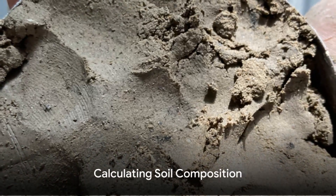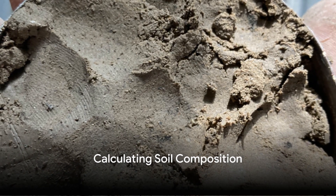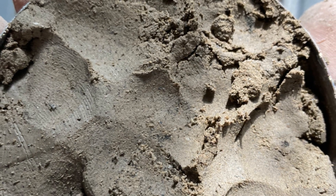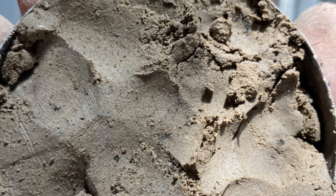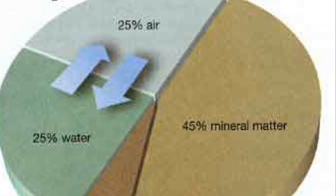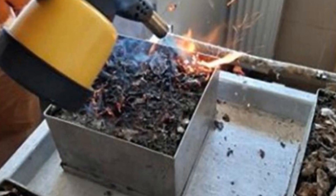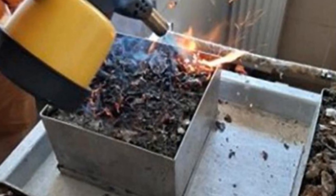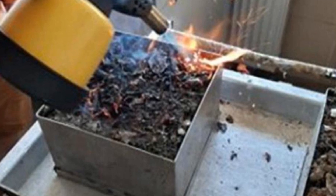Finally, we can calculate the percentage of air, water, and humus in a soil sample by weighing the sample, then drying and re-weighing it. The difference gives us the percentage of water. Burning the dry soil then gives us the percentage of humus, with the remainder being the percentage of air.